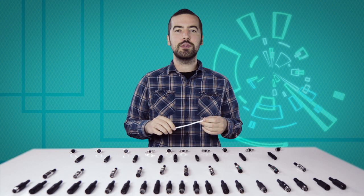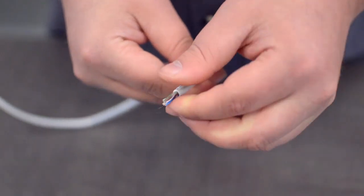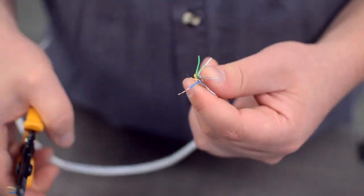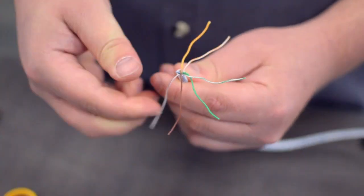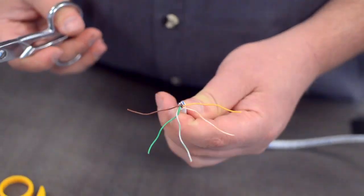For this example, we will be using CAT 5E cable. You will also need to strip the individual conductors. Trim off any additional conductors if needed.